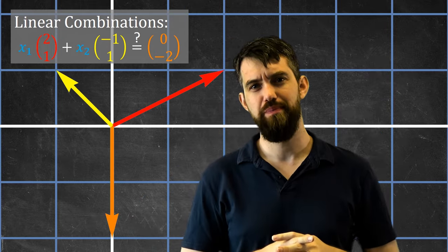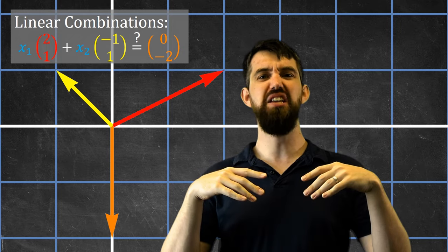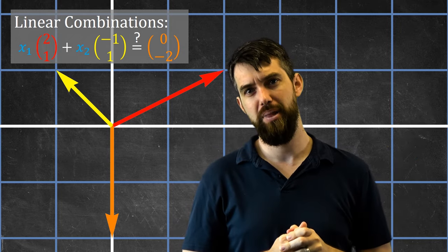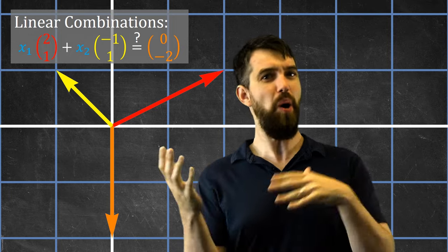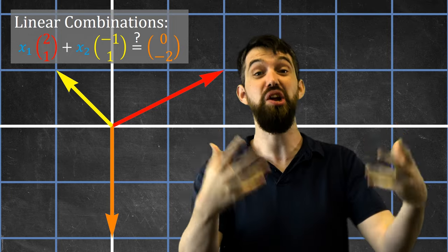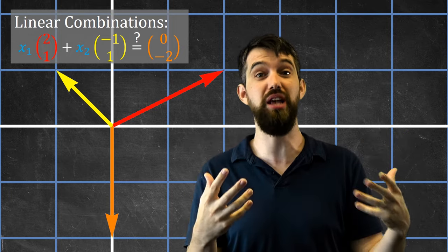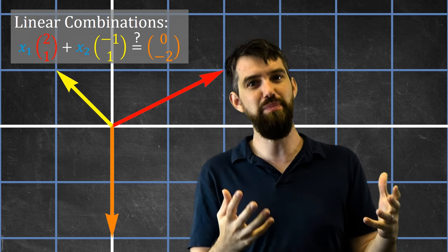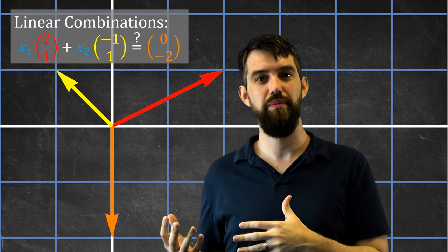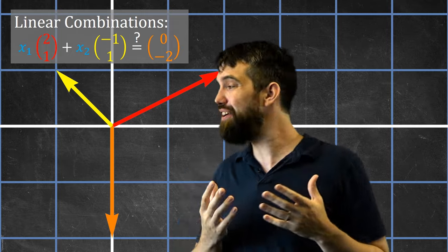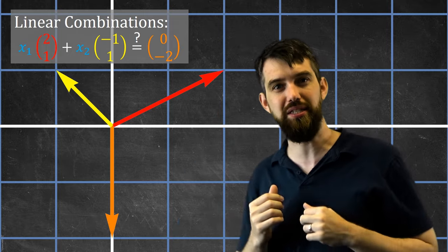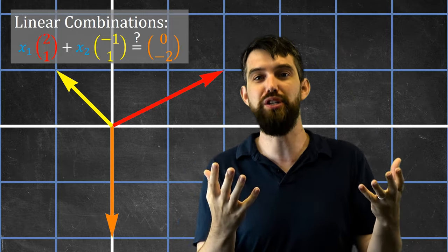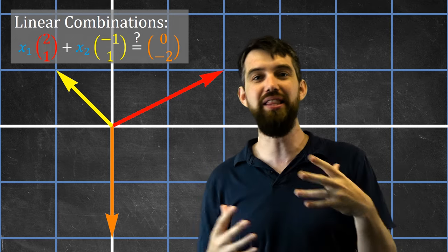Now suppose I wanted to reach a different vector, say (0,-2). Is it possible that there is some linear combination of the red and the yellow — some combination of coefficients a and b — that gets me to (0,-2)? Can I find scalar multiples x1 and x2 such that I can align these vectors to reach that point?